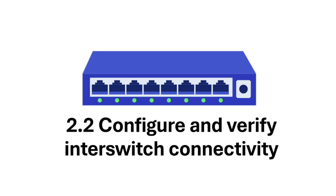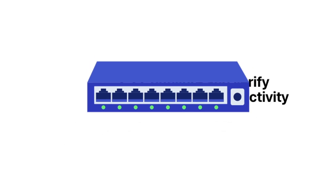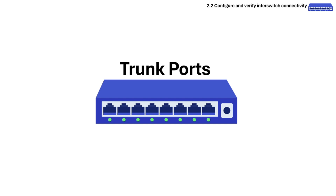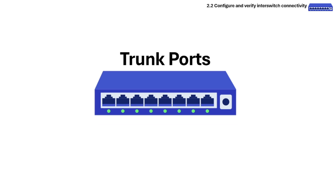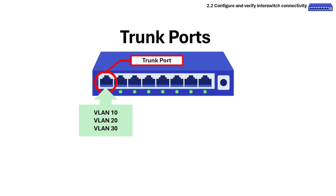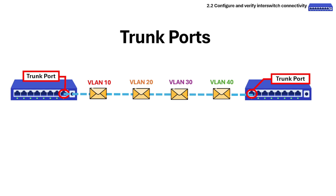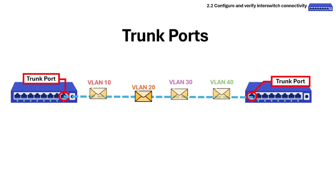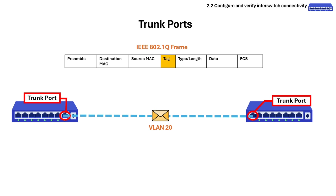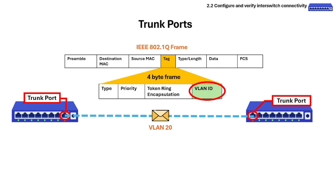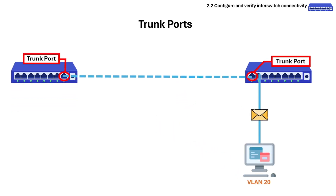Section 2.2 is about inter-switch connectivity. The first topic is trunk ports. A trunk port on a switch is configured to carry traffic for multiple VLANs, enabling communication between different VLANs across multiple switches. Trunk ports use VLAN tagging to identify which VLAN each frame belongs to. The IEEE 802.1Q inserts a 4-byte tag in the Ethernet frame to identify the VLAN as it crosses the trunk, allowing switches to forward traffic to the correct VLAN on other switches.